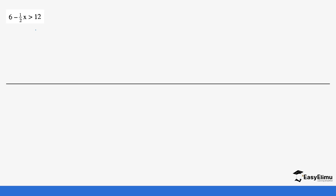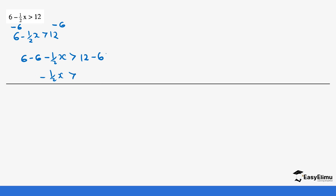Let's look at another example: 6 minus 1.5x is greater than 12. We solve this the same way. Subtract 6 from each side: 6 minus 6 minus 1.5x is greater than 12 minus 6. Be very careful. This gives us minus 1.5x is greater than 6, because 12 minus 6 is 6. So we are going to multiply by the reciprocal, negative 2 over 1. This automatically causes us to change the sign from greater than to less than, and 6 times negative 2 over 1 gives us negative 12.